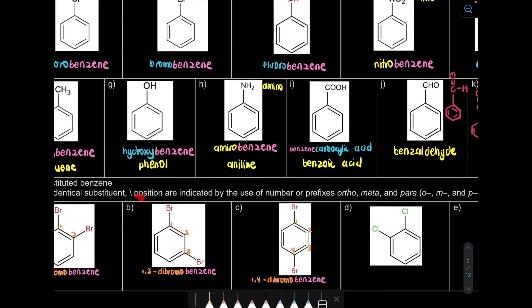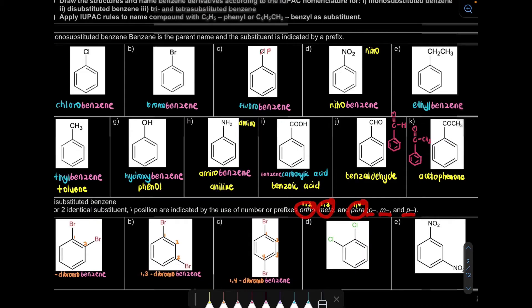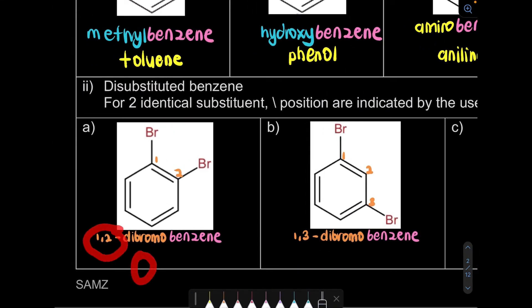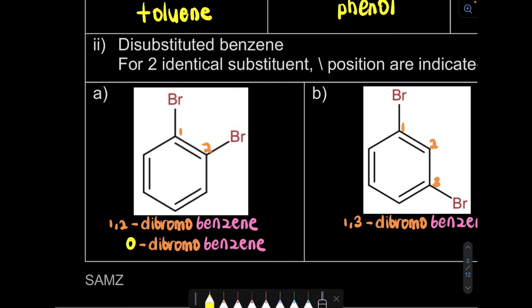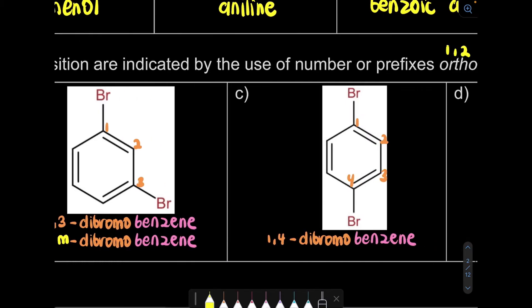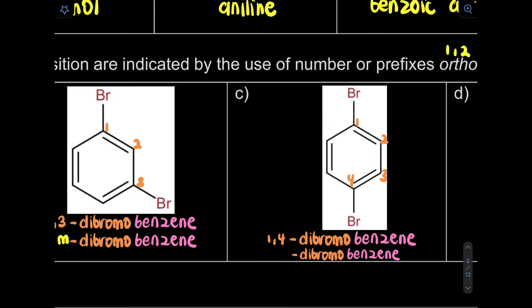We can also use the prefixes ortho, meta, para — abbreviated O, M, P. Ortho means substituents at positions 1 and 2, meta at 1 and 3, and para at 1 and 4. So 1,2-dibromo-benzene can also be named o-dibromo-benzene (ortho-dibromo-benzene). 1,3 is m-dibromo-benzene (meta), and 1,4 is p-dibromo-benzene (para). Questions D and E you should try yourself.